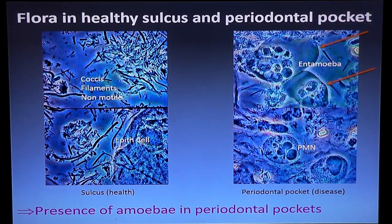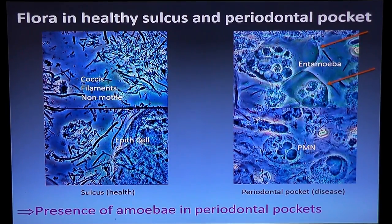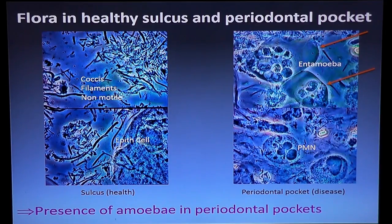What we can do is use the microscope to understand this disease. On the left side, you have biofilm — microbes within the gum, within the sulcus. On the left side you have good microbes and health. When you have health, you only find those little non-motile bacteria, which are coccoid-like — just coccoid and filament, like dots and lines — and you have epithelial cells which come from the gum when we take the sample. There's no pain; you just take one minute to take this sample and look on the microscope at 1000 magnification on a hospital-grade microscope.